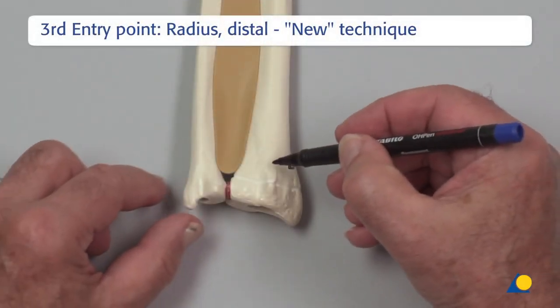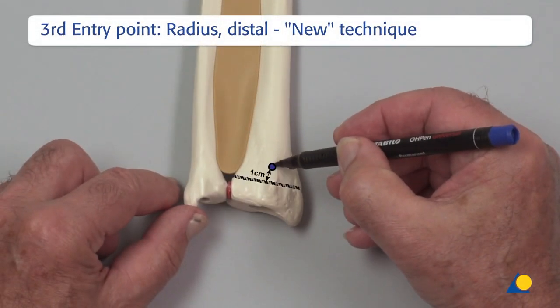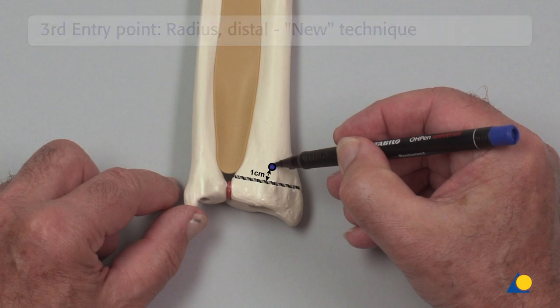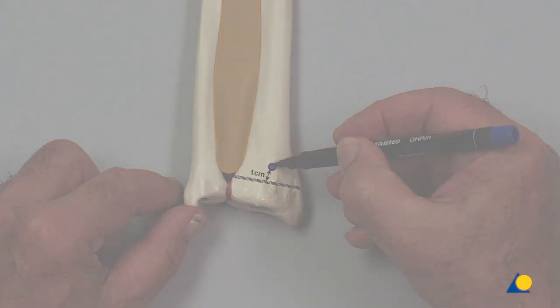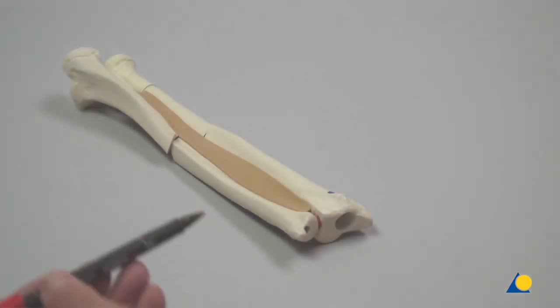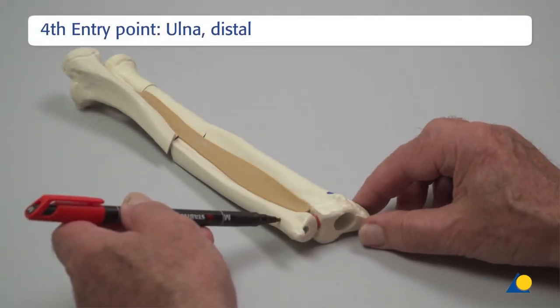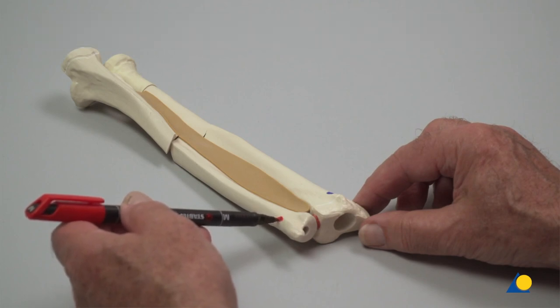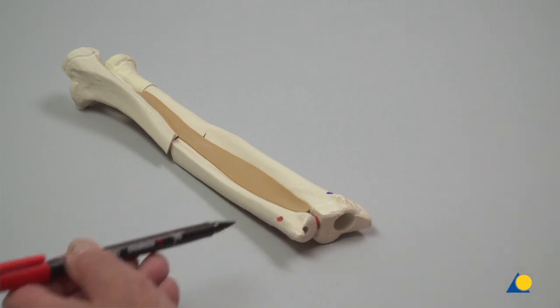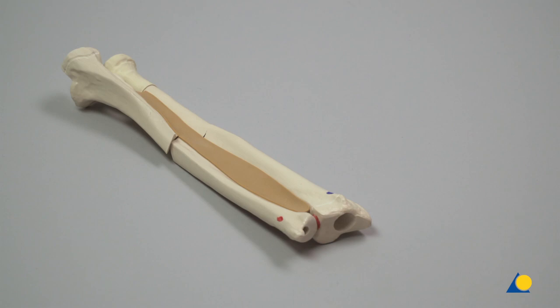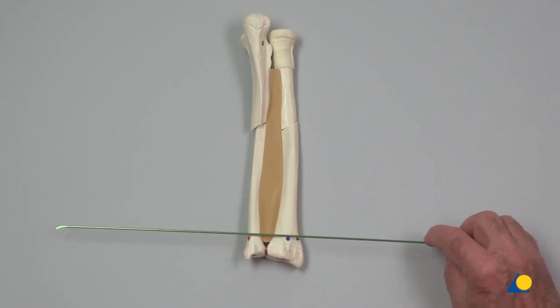In the radius, a new alternative entry point is 1 cm proximal to the growth plate on Lister's tubercle. The nail entry point for the retrograde technique on the ulnar is on a 45-degree plane between the dorsal-volar and ulnar-radial plane, 1 cm proximal to the growth plate. Both entry points of the ulnar and radius are on the same level.